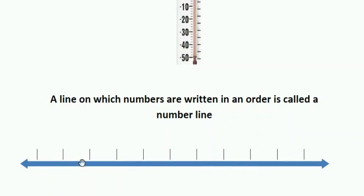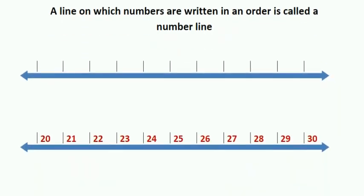What did you notice about the gap between each marking? The gap between each marking is the same throughout the number line. It is very clear from the drawing that the gap between each marking is equal. We can write numbers near these markings on a number line.